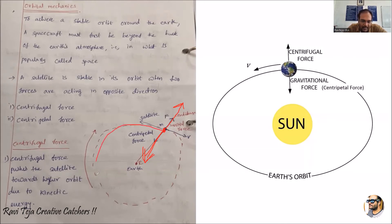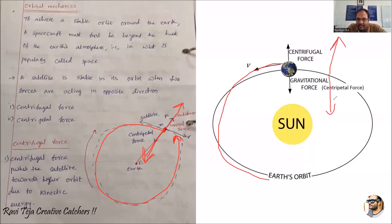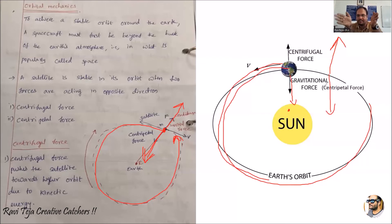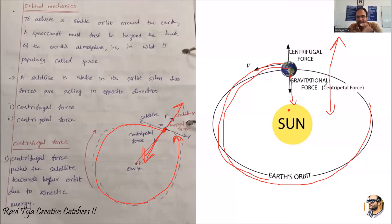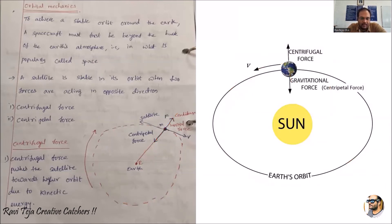When these two opposite forces balance, the satellite moves stably in its orbit. Based on centripetal and centrifugal forces acting in opposite directions, the satellite is able to remain stable and move along the earth in its satellite orbit. Similarly, when the earth moves around the sun, it experiences both centrifugal and centripetal (gravitational) forces, which keep the earth traveling in its own orbit. These two examples illustrate how orbits are maintained.